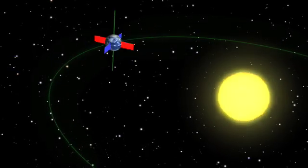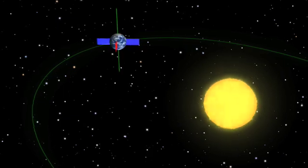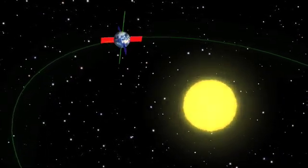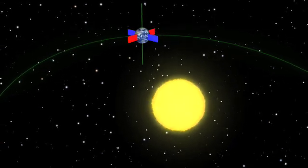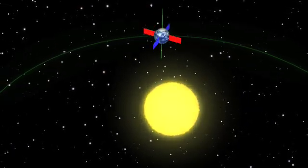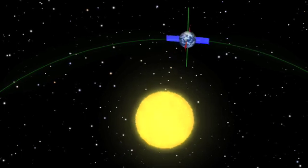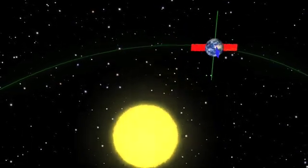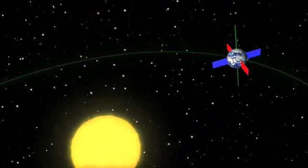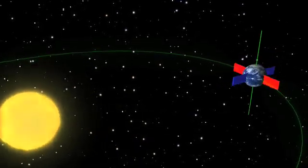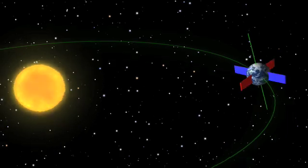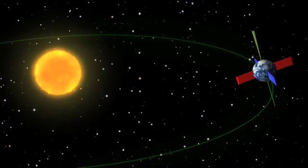In addition to axial precession, there's the axial tilt, the angle the Earth's rotational axis makes with its orbital plane. It is currently about 23.4 degrees and is declining. This tilt varies from 22.1 degrees to 24.5 degrees. It makes one complete tilt and back every 41,000 years.